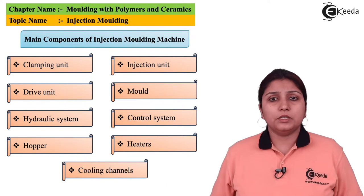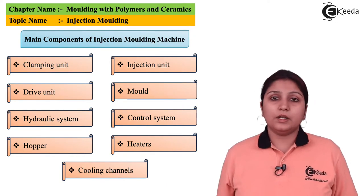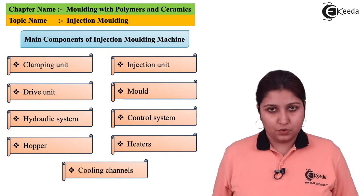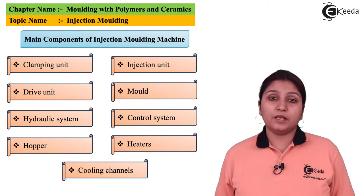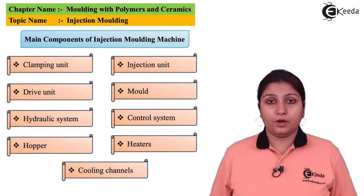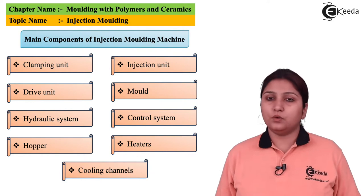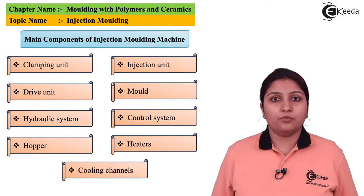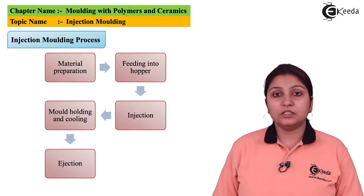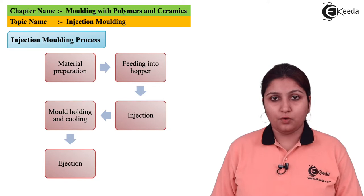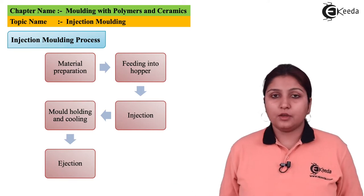These are some components used in the injection molding process: you need a clamping unit and an injection unit, as all these units play a very important role, unlike in compression molding or other molding processes. These are some general steps to follow: firstly you need to feed the material, then the injection takes place.